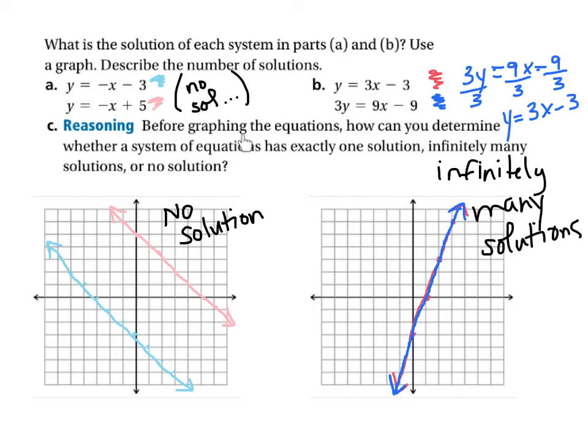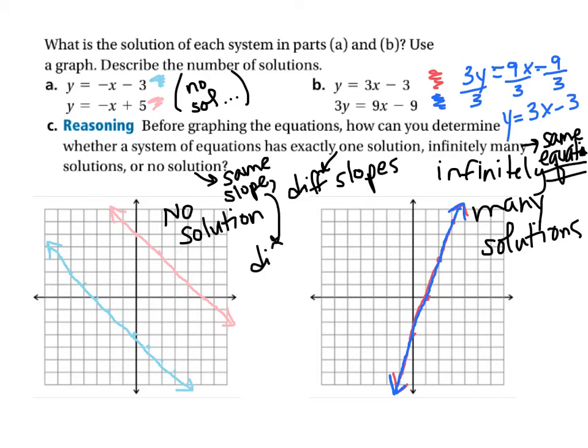Now I couldn't tell that until I solved the second equation for Y, which brings me to my question here. Before graphing the equations, how can you determine whether a system has exactly one, infinitely many, or no solutions? Well, that's very easy to answer at this point. Exactly one is different slopes. Infinitely many, that's when it's the two equations but it's the same equation. And no solution at all: same slope but different Y intercept. That's the whole gist of how systems of equations work when you're graphing them.